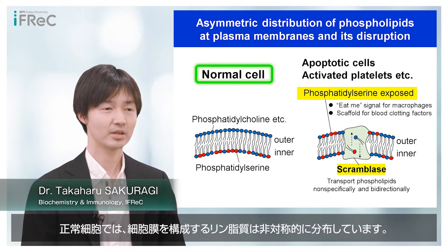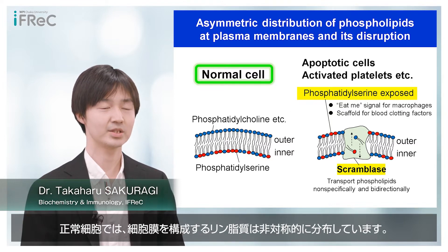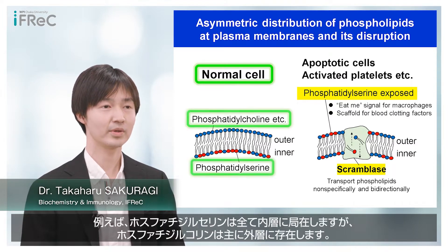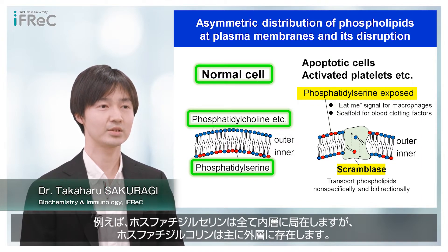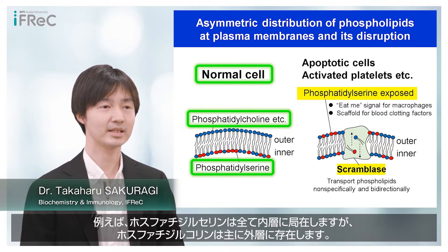In normal cells, phospholipids at plasma membranes are asymmetrically distributed. For example, phosphatidylserine exclusively localizes to the inner leaflet, while phosphatidylcholine mainly localizes to the outer leaflet.